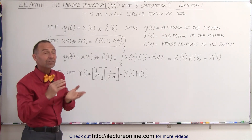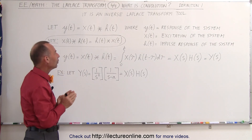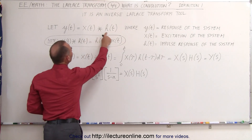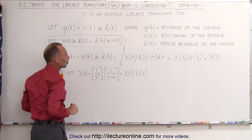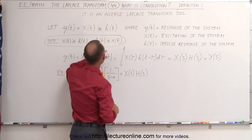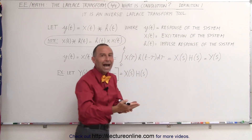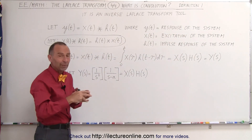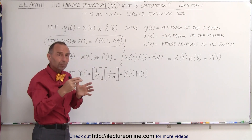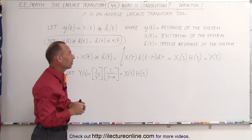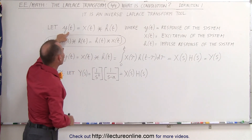Later on we'll show you some graphical examples to solidify our understanding of convolution. But right now, what we need to realize is that when we convolve these two functions, we get the output response function. Notice that y of t is the response of the system — it's the output of the system. Let's say we have some electronic circuit with some input, and then the circuit does something to the input, and then we get an output. y is the response or the output of the circuit, and we set that as y of t.